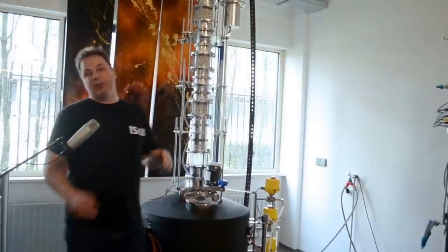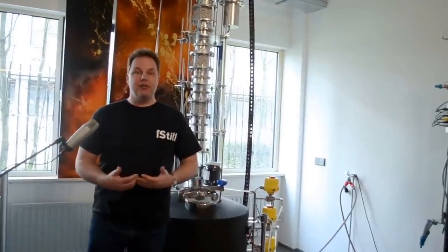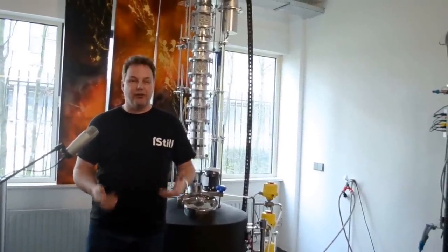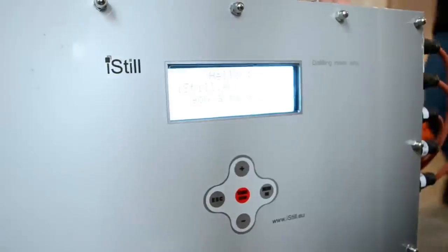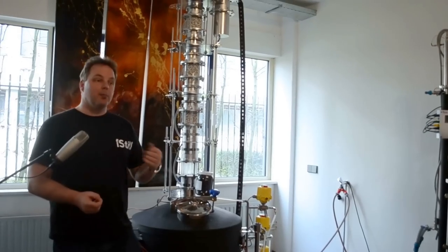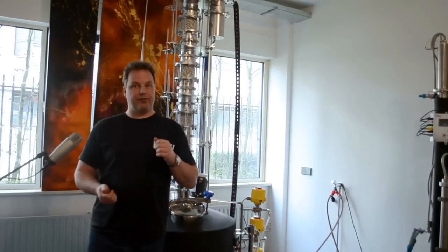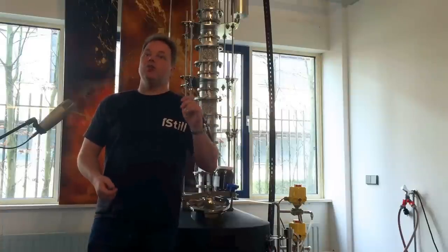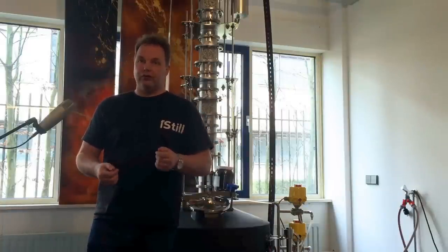What's special about this column? Well, I'm not going to dive into that too deeply because that's not really the topic of today, but it's a robotized still that you can use as a pot still. Pot distillation is what you want. Pot distillation brings over a lot of flavor. If you make gin, you want your gin to be very flavorful. So pot distillation is the choice to go.